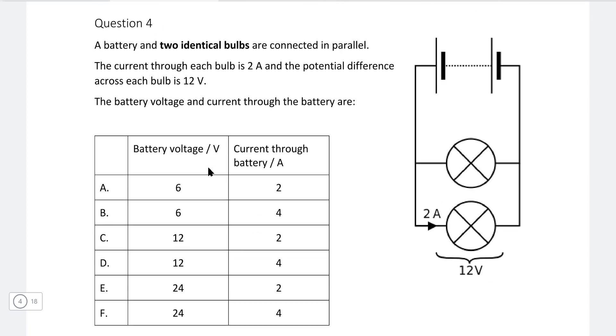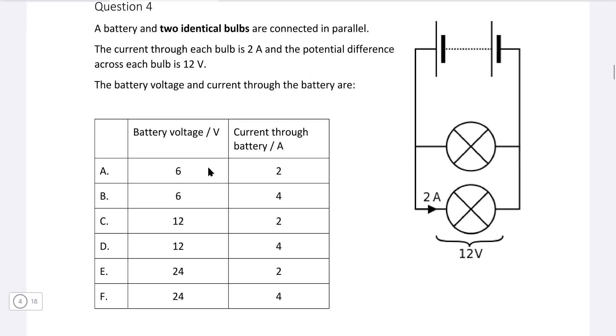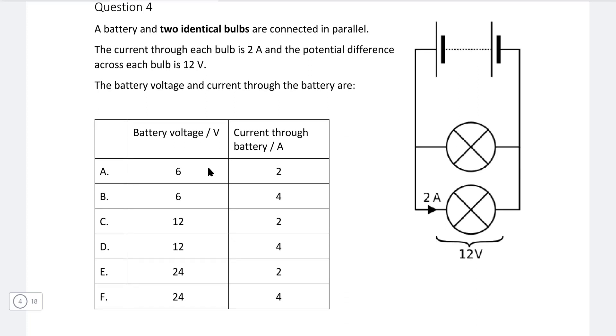Okay, question four: we have a battery and two identical bulbs are connected in parallel. The current through each bulb is 2 amps and the potential difference across each bulb is 12 volts. The battery voltage and the current for the battery are?